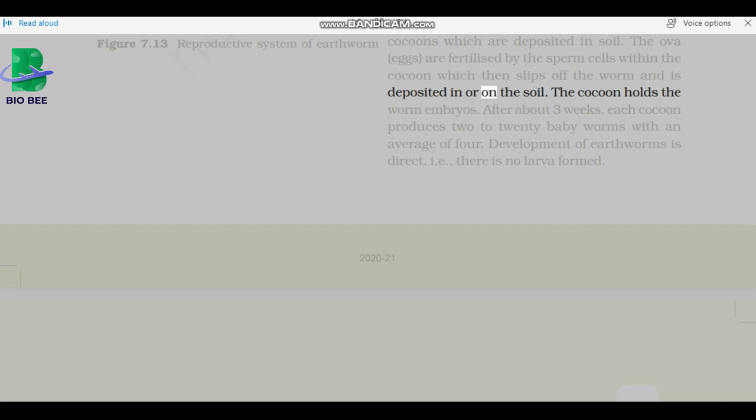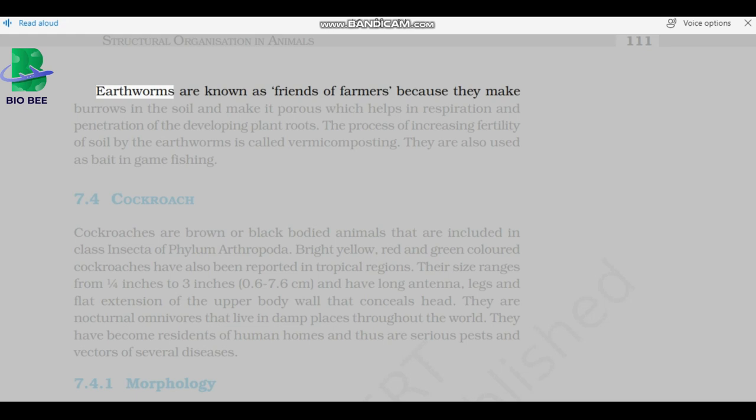Fertilization and development occur within the cocoons which are deposited in soil. The ova or eggs are fertilized by the sperm cells within the cocoon which then slips off the worm and is deposited in or on the soil. The cocoon holds the worm embryos. After about 3 weeks, each cocoon produces 2 to 20 baby worms with an average of 4. Development of earthworms is direct, i.e., there is no larva formed. Earthworms are known as friends of farmers because they make burrows in the soil and make it porous which helps in respiration and penetration of the developing plant roots. The process of increasing fertility of soil by the earthworms is called vermicomposting. They are also used as bait in game fishing.